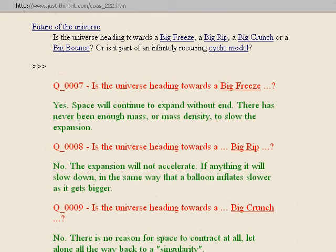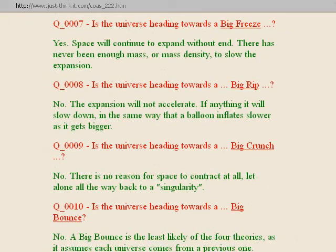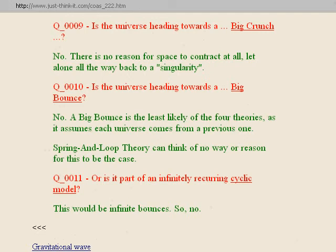Question nine: is the universe heading towards a big crunch? No, there's no reason for space to contract at all, let alone back to a singularity. Question ten: is the universe heading towards a big bounce? It would have to collapse with a big crunch before it could have a big bounce, so no — the big bounce is the least likely, as it assumes each universe comes from a previous one. Spring-in-Loop Theory can think of no reason for this. Question eleven: or is it part of an infinitely recurring cyclic model? No.